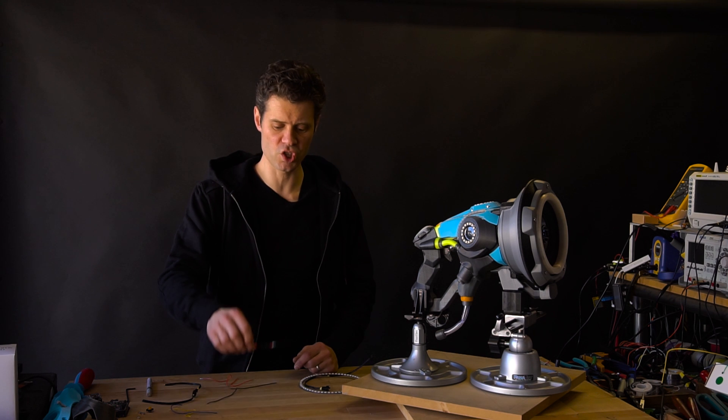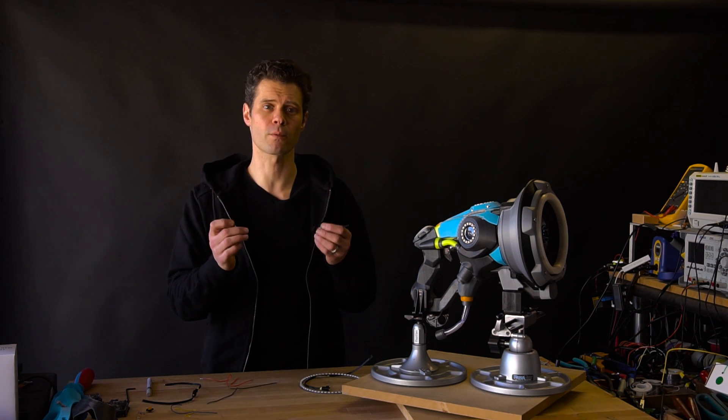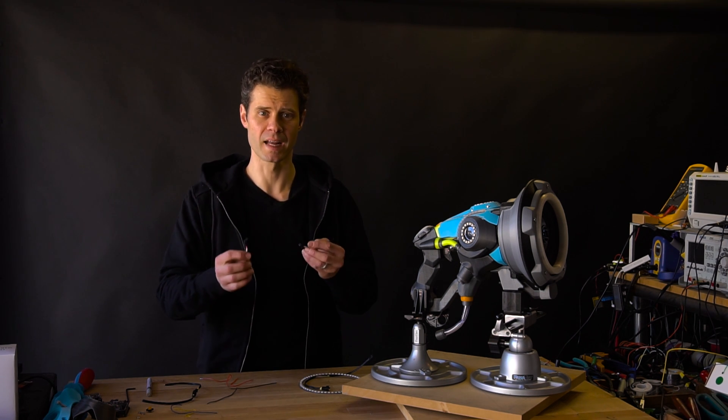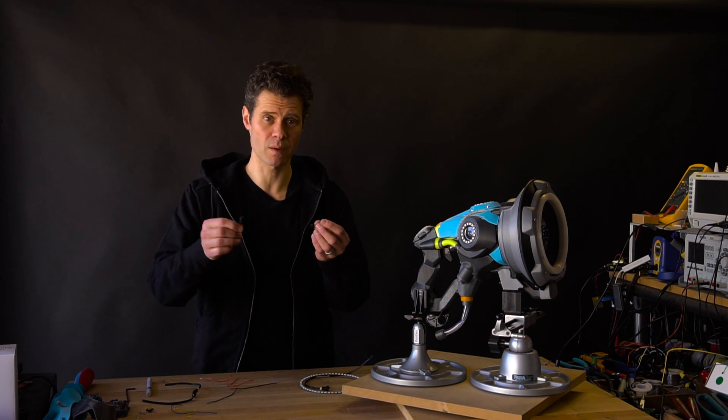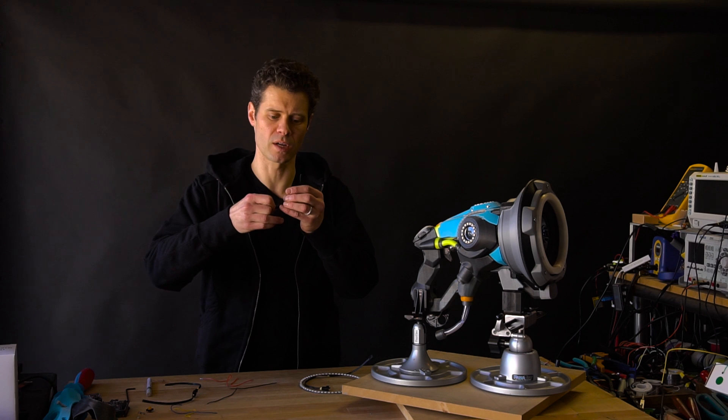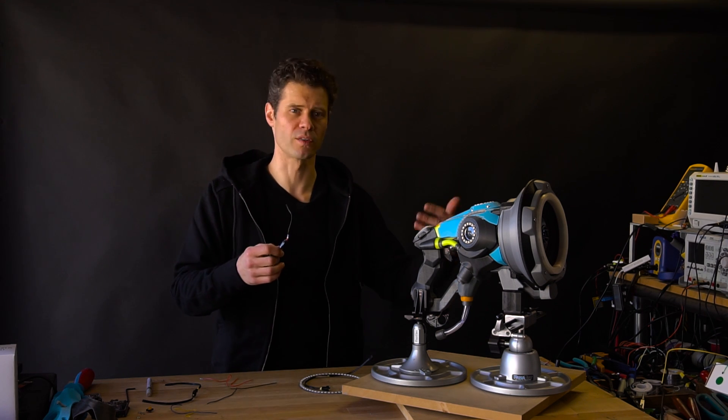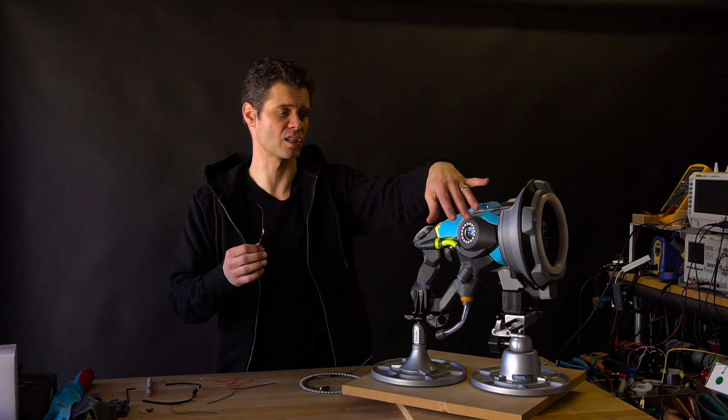The other tip is use JST connectors or other polarized connectors where you can and color code them. So this way you can't plug things in backwards when you have things apart and they need to go together such as the trigger and the switches on this or the lights and the speakers.